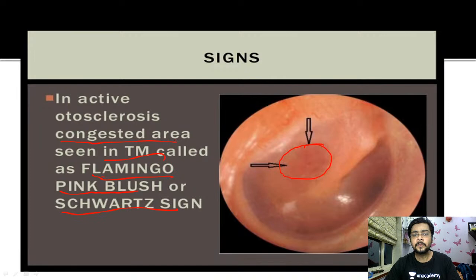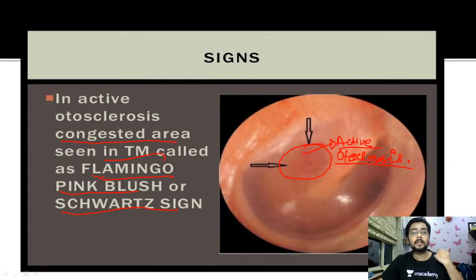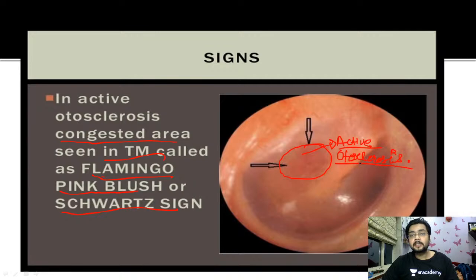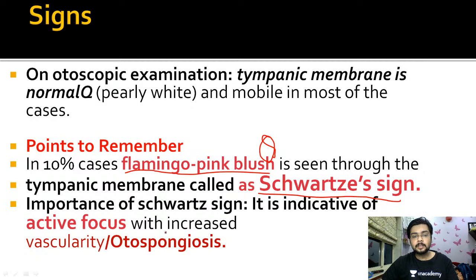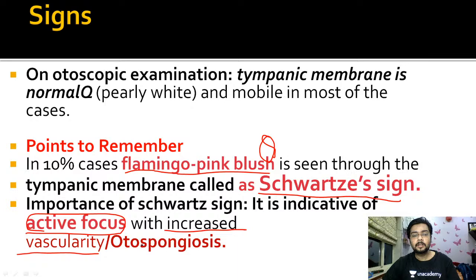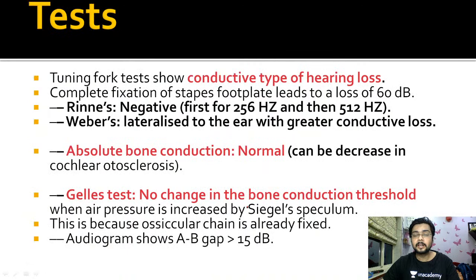The flamingo pink sign is an indicator of the active stage of otosclerosis. When I say 'active,' it means osteoclastic and osteoblastic activity - bone resorption - is occurring at a very high rate. Vascularity is increased, with more formation of vascular tissue inside the bone. This sign is present because of increased vascularity and increased vascular tissue formation, causing increased redness and congestion - denoting the active stage of otosclerosis.